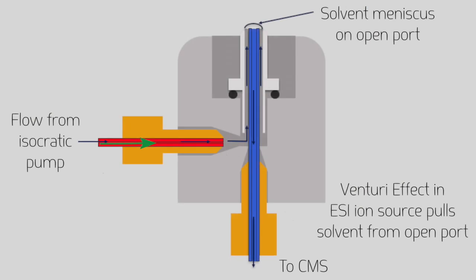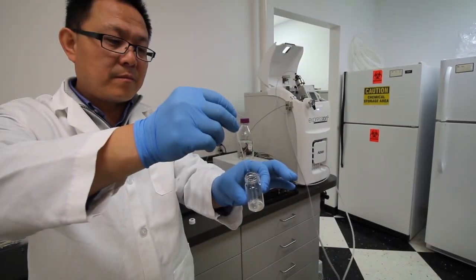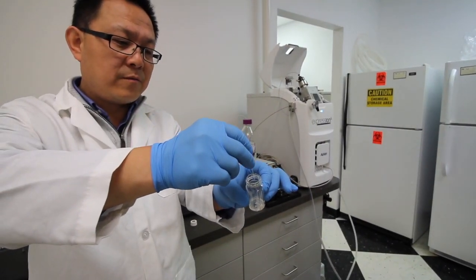Solvent is delivered to the open port sampling area through a pair of concentric tubes. The solvent forms a meniscus at the open port before being drawn down the outer tube into the ion source of the mass spectrometer under the Venturi effect of the nebulization gas in the ion source. No sample preparation is required.